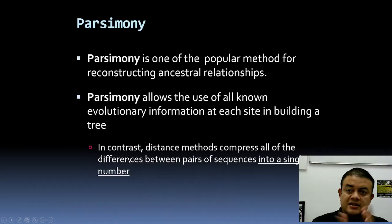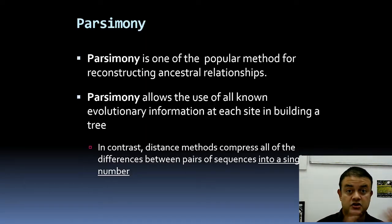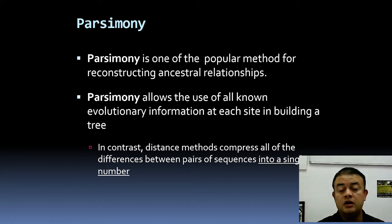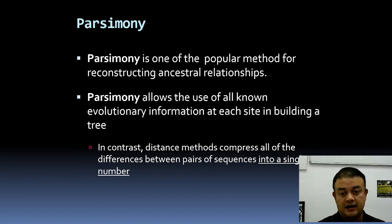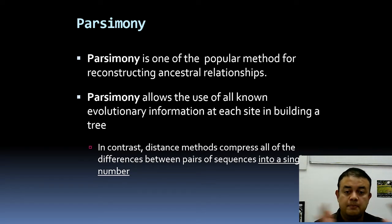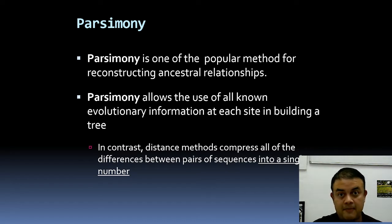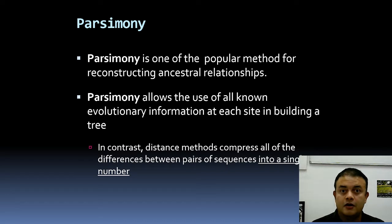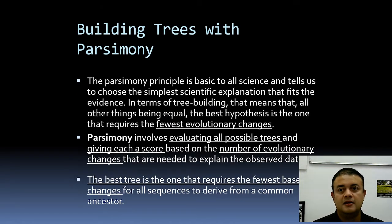Parsimony is one of the most popular methods for reconstructing ancestral relationships. It allows the use of all evolutionary information at each site in building a tree — you look at each site separately. In contrast, distance methods put everything into one number — the distance — in the matrix, and then you consider the tree based on that number alone, which is highly inaccurate.